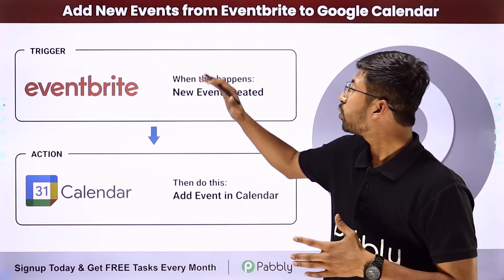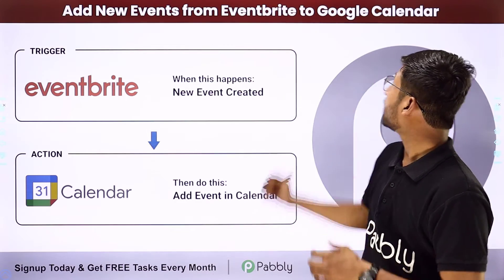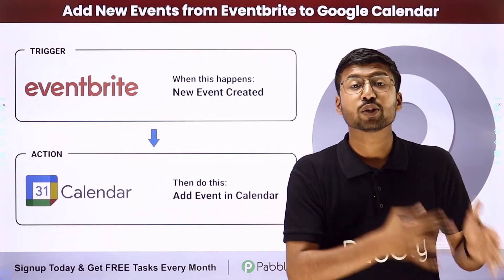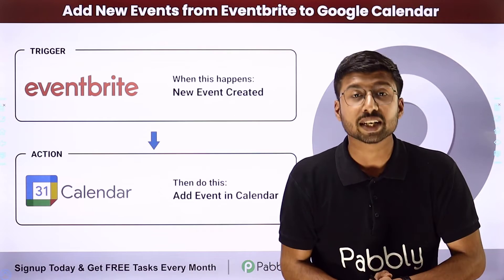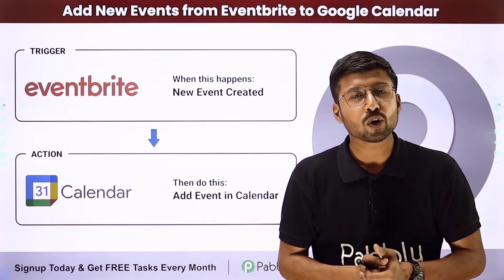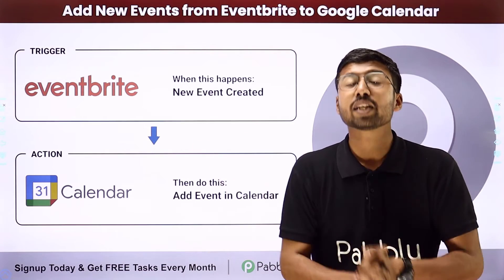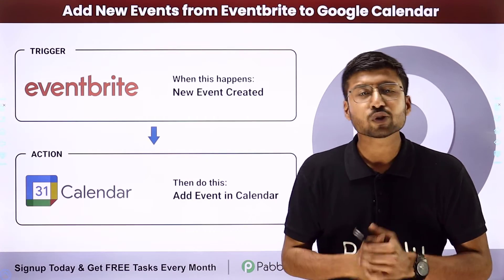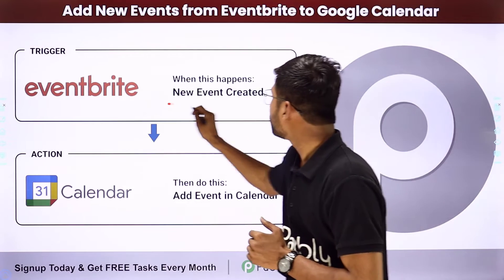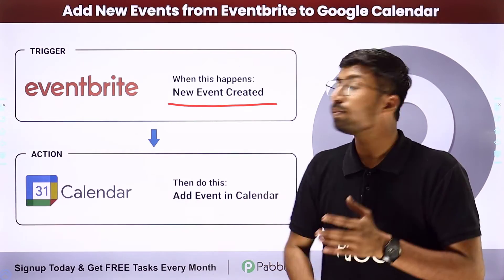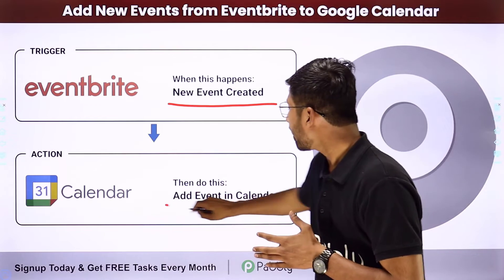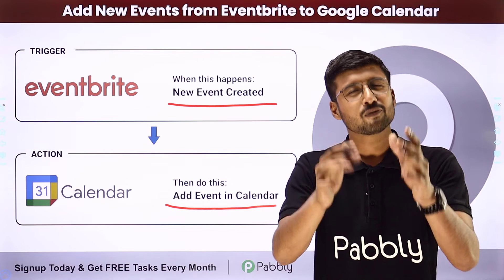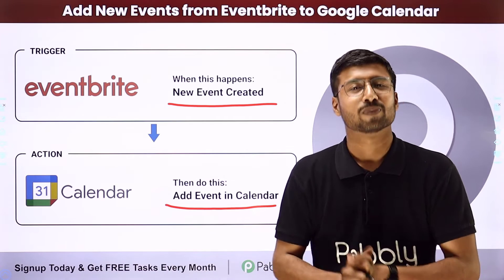In this video, we are going to learn how to automatically add new events from Eventbrite to Google Calendar. If you and your team members are using Eventbrite to create, manage and host online and offline events, and you want to add those same events in your Google Calendar as well, you can completely automate this process. Whenever a new event is created in Eventbrite, automatically with the same details, those events will be added to Google Calendar. To set up this automation, just follow along on screen.